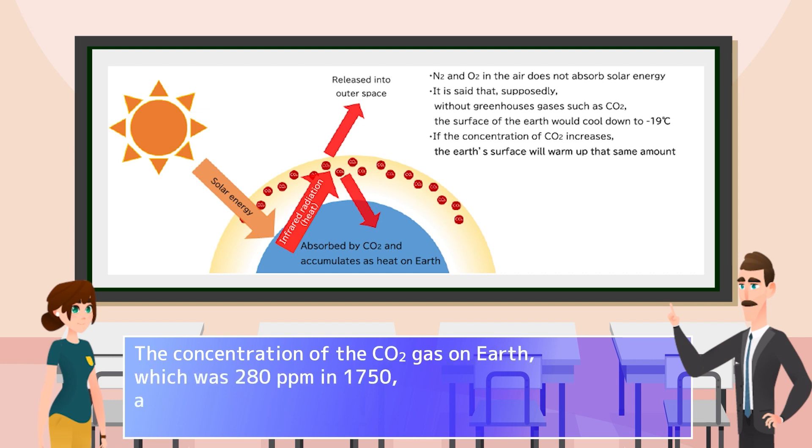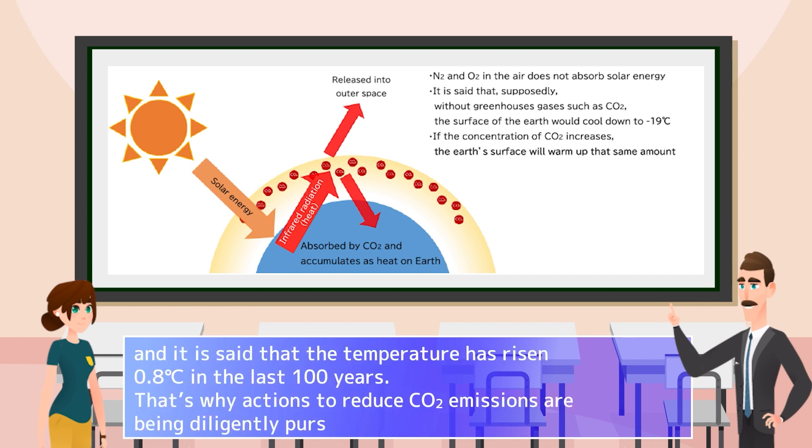The concentration of the CO2 gas on Earth, which was 280 ppm in 1750 at the time of the Industrial Revolution, has spiked by 48% to 415 ppm as of 2021, and it is said that the temperature has risen 0.8 degrees Celsius in the last 100 years. That's why actions to reduce CO2 emissions are being diligently pursued worldwide.